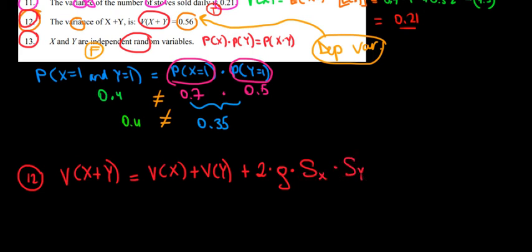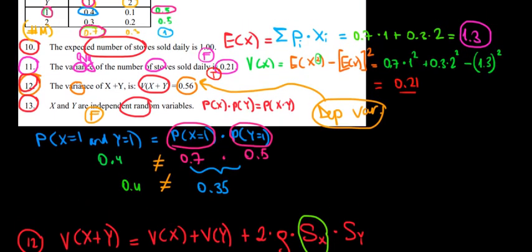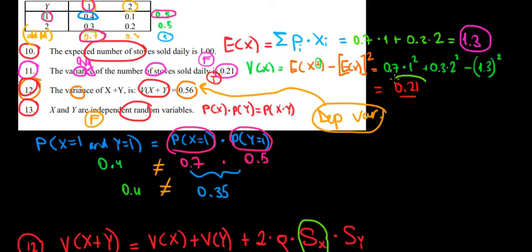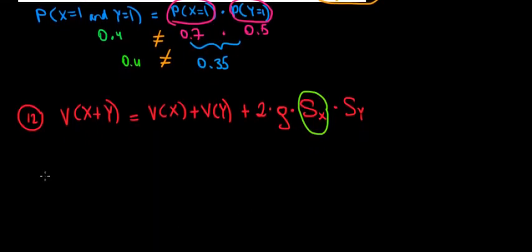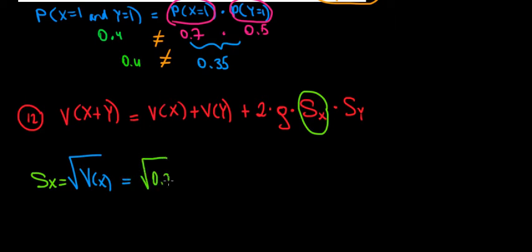What's the fastest thing we can find? We have the variance of X, and the standard deviation of X is just the square root of the variance. We calculated the variance of X from before — that's 0.21. So the standard deviation of X is equal to the square root of 0.21, which equals 0.46. That's one piece of data found: 0.46.